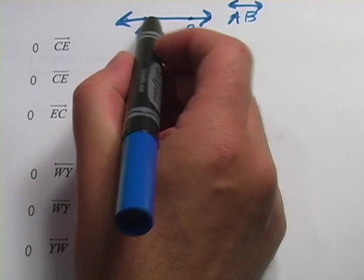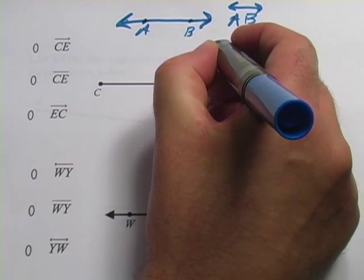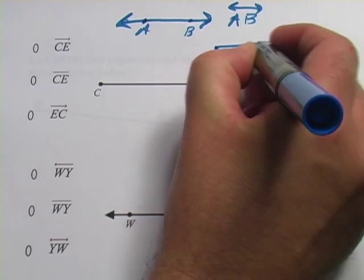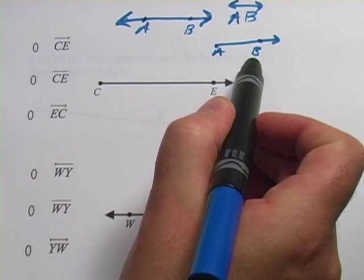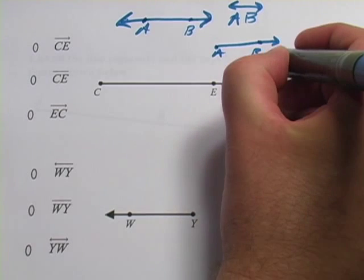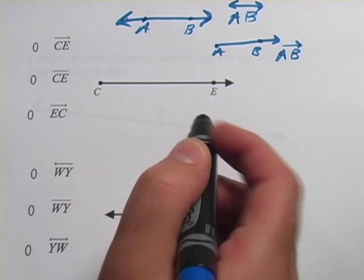Now, if you took just from A and went off in this direction, you'd have half the line, and that's what a ray is. If this is point A and this is point B, this thing is called a ray. A ray is written with the names of two points and then just an arrow pointing in one direction.